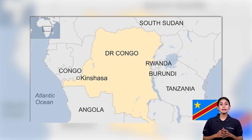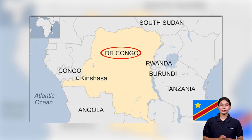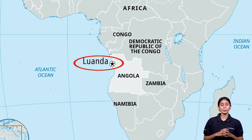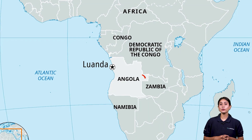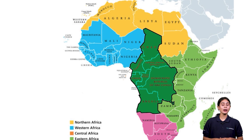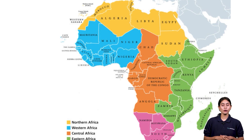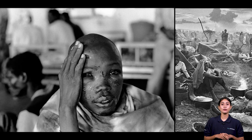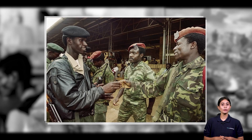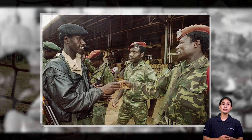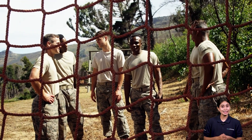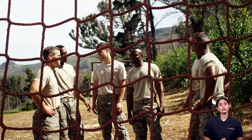Kinshasa, the capital of DR Congo, is the third most populous city in Africa. Luanda, the capital of Angola, is also located in the region. However, Middle Africa has been the site of recent conflicts such as the 1994 Rwandan genocide. Armed conflicts involving various ethnic groups and militias continue to plague the region, causing instability and ineffective governance.